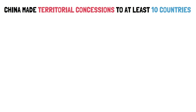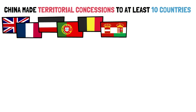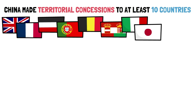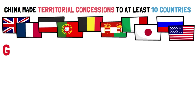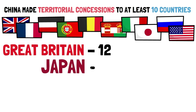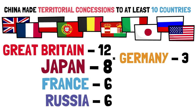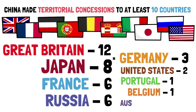In total, there were a lot of concessions, both in leases and through trade ports, to at least 10 countries: Great Britain, France, Germany, Portugal, Belgium, Austria-Hungary, Italy, Japan, Russia, and the United States. The British were by far those with the most concessions — around 12 — then the Japanese with 8. France and Russia each had 6, Germany 3, the US had 2, and Portugal, Belgium, and Austria-Hungary each had 1, totaling around 40 concessions overall.